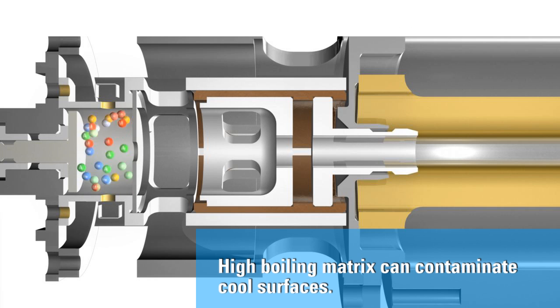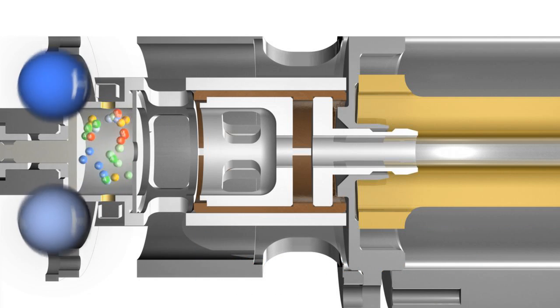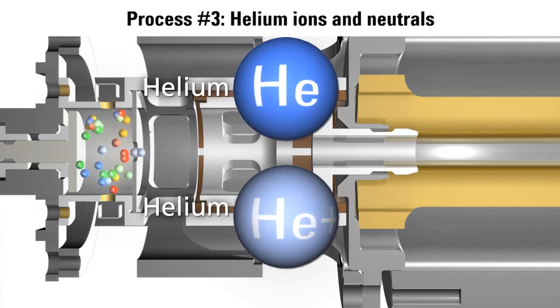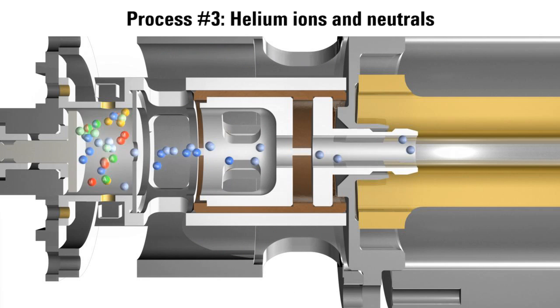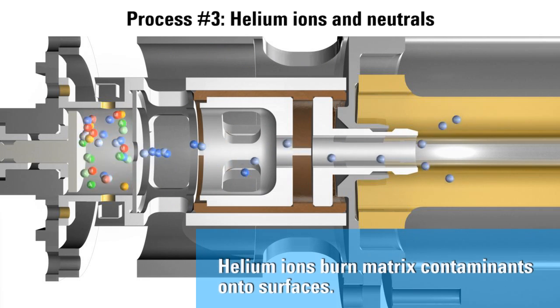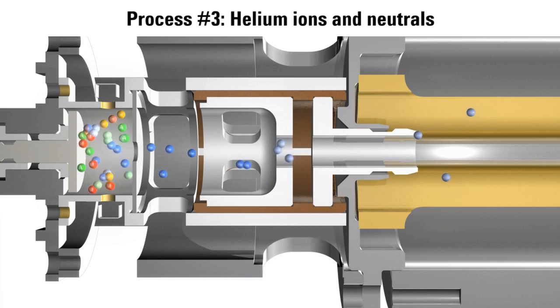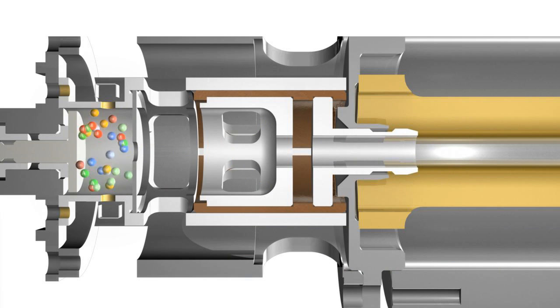As we think about the potential for contamination, we must not forget helium. The intense flux, high flow of helium ions helps to burn the high boiling molecules onto the surfaces of the source and the analyzer. The cooler the surfaces, the faster the rate of contamination, and the faster performance is lost.